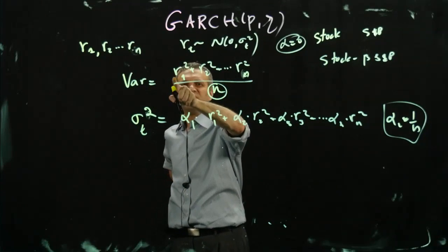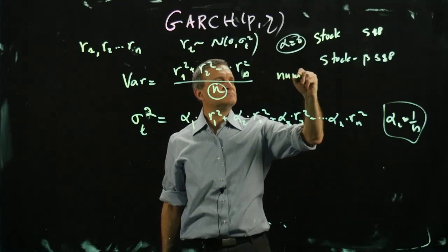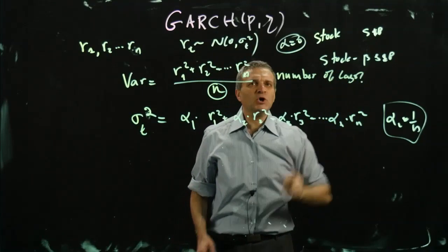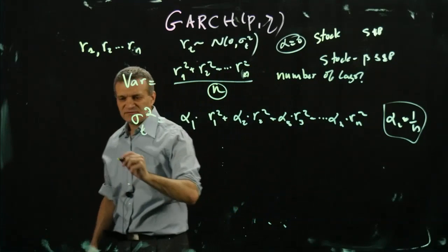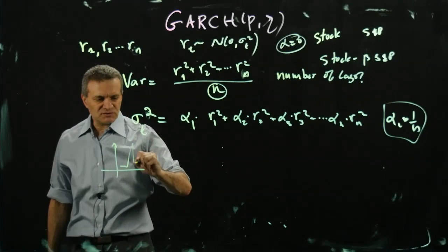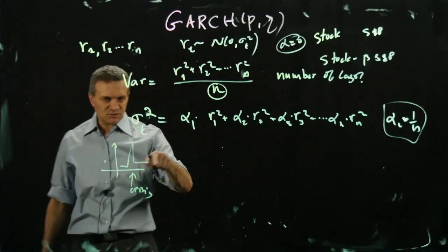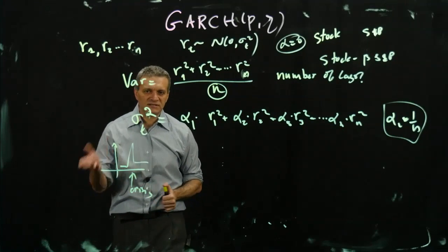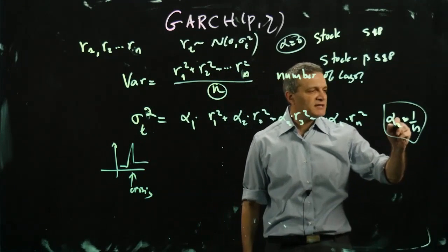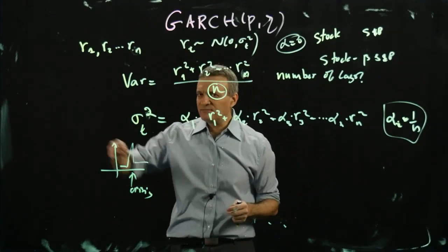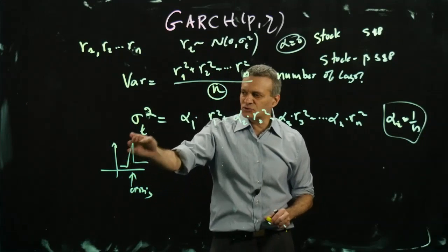What is GARCH? The first thing you want to decide is what n is — how many lags to include — because volatility is actually time-dependent. We saw spikes in volatility during the financial crisis, and oil volatility is spiking now as prices drop. Go too far back and you may include those extreme peaks.